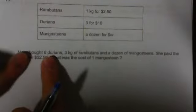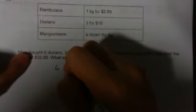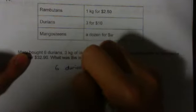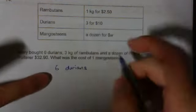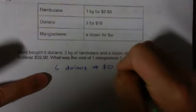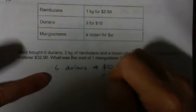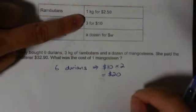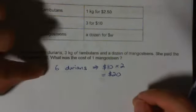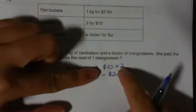First, the durians. 6 durians, how much will it cost? 3 for 10 dollars, so 6 will be 10 dollars times 2 equals 20 dollars. Because 3 for 10 total 6, 6 divided by 3 is 2, 2 times 10 is 20.